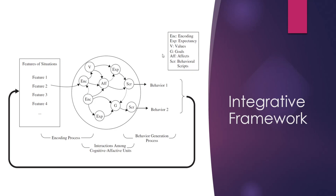Specifically, what Mischel is trying to say is that there are five mediators, or cognitive affective units: encoding, expectancies, values, goals, affects, and in some papers, behavioral scripts. Mischel is also telling us that situation A is different from situation B because there are different features and components in each situation. For example, your behavior when you're with your mom is different from when you're not with her, because your mom is no longer present in situation B.